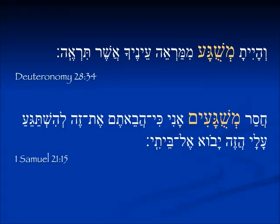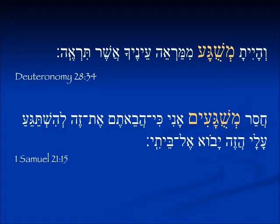Here's a plural form in 1 Samuel 21: 'chaser mishuga'im ani.' This is when David goes and feigns madness so he can escape from Gat, and the king says, 'chaser mishuga'im ani' — am I lacking in crazy people, that you brought David here to be crazy? Take him away. If you look at the end of the first line, you see the verb lehishtageya — this is also the same root, but it's in a hitpa'el form; we'll study that later.